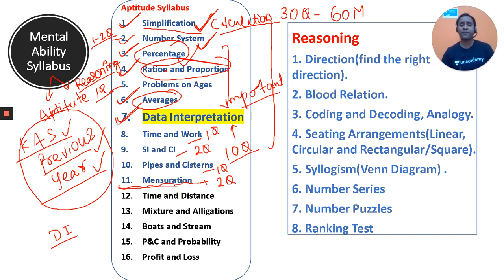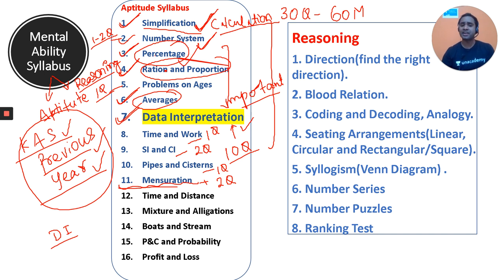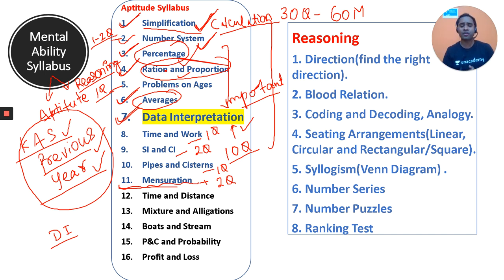Data interpretation is very important — about 10 questions — and percentage, averages, ratio and proportion are all needed to understand it. Data interpretation will also include pie charts, table charts, and more, which we'll discuss in the YouTube live classes.